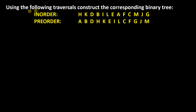Dear students, see the question. Use the following traversals and construct the corresponding binary tree. You all know that for a binary tree, there are three types of traversals: inorder, preorder, and postorder. But here, you are given only two orders — inorder and preorder — and using these two, you have to construct the binary tree. Let's see how we can do that.